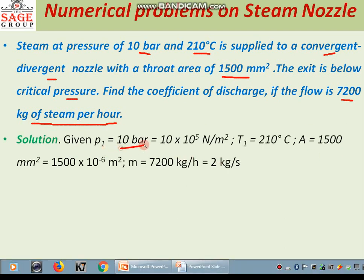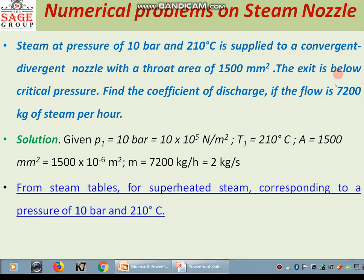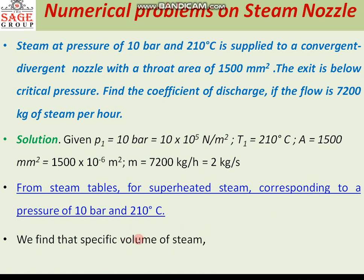Here, pressure P1 equal to 10 bar, that is 10 into 10 to the power 5 N per square meter. Temperature T1 equal to 210 degree centigrade. Area A equal to 1500 square millimeter, that is 1500 into 10 to the power minus 6 square meter. Mass flow rate M is given as 7200 kg per hour, equal to 2 kg per second. From the steam table, at 10 bar and 210 degree centigrade, we find the specific volume of steam is 0.2113 cubic meter per kg.